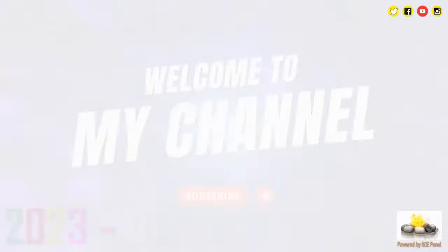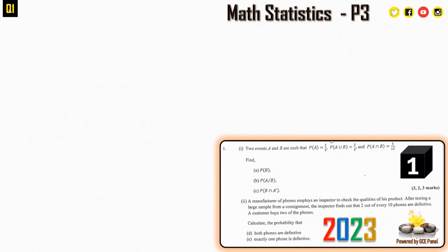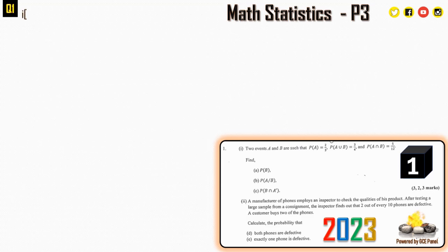Let's take the first question. Two events A and B are such that the probability of A is two thirds, probability of A union B is three quarters, probability of A intersection B is five on twelve. Find: (a) the probability of B, (b) the probability of A given B, and (c) the probability of B intersection A prime.